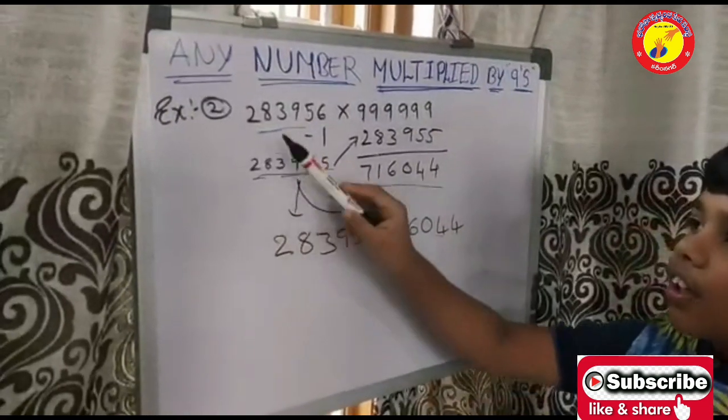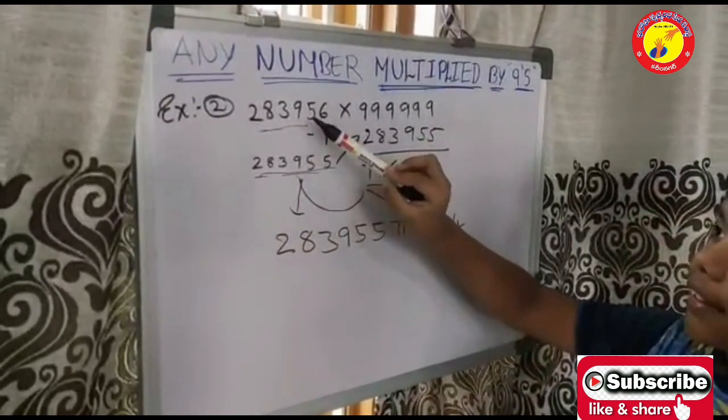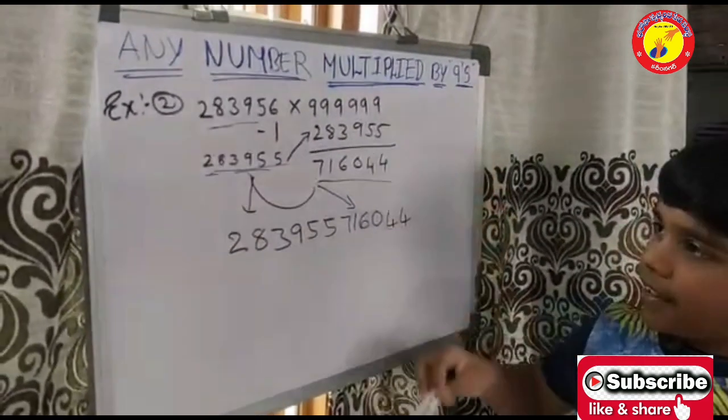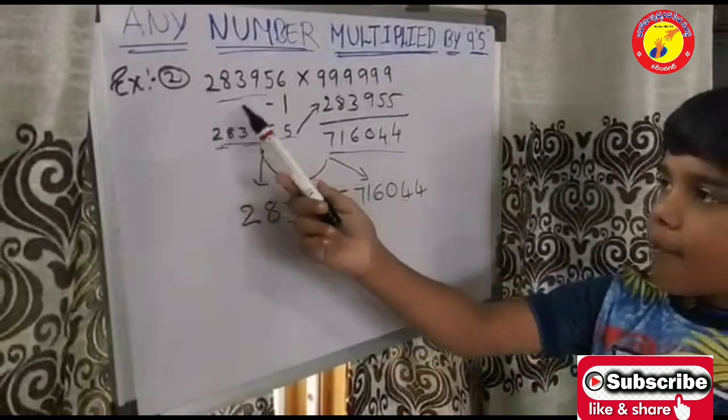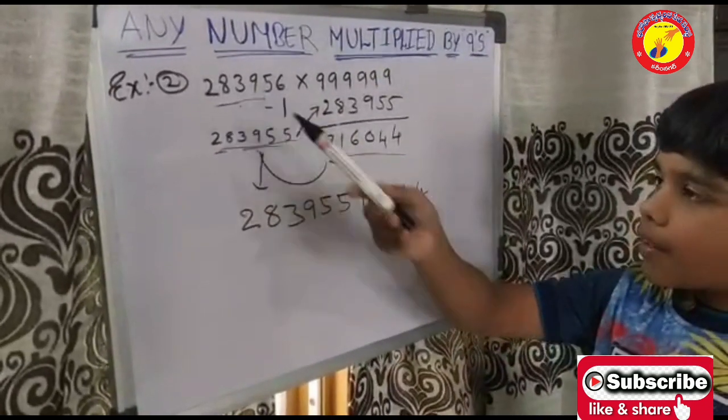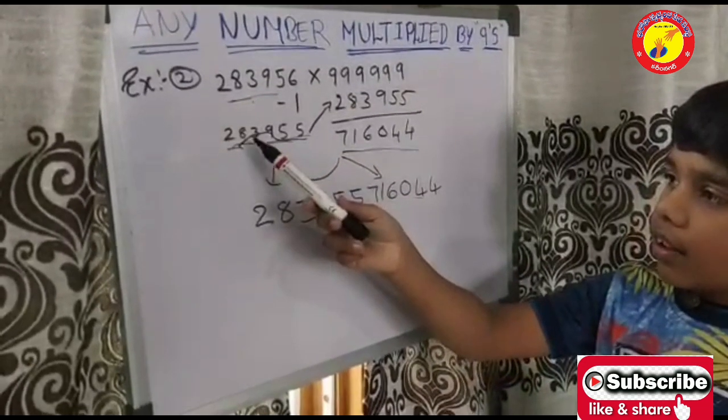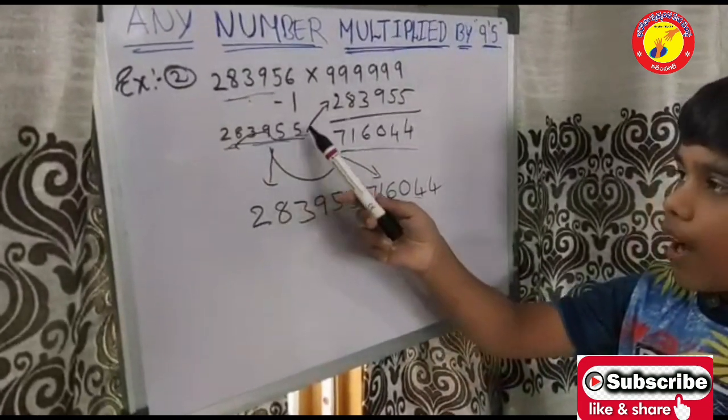Number 2, 283956 x 999999. Subtract number 1. Subtract number 1 from this number. The answer is 283955.